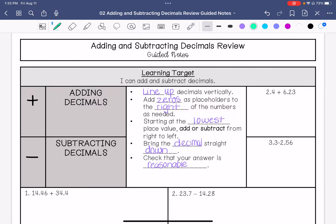Let's do this first example. We have 2.4 plus 6.23. We're going to line up the decimals, and then we are going to add placeholders to the right. So we're going to put a zero right here. Zero plus three is three, four plus two is six, and six plus two is eight. We're going to bring down the decimal point straight down, and our answer is 8.63.